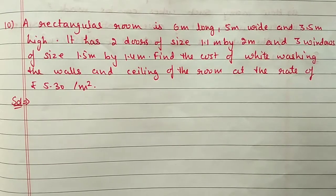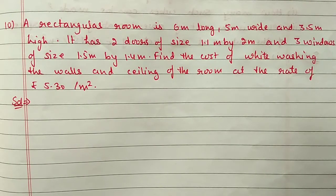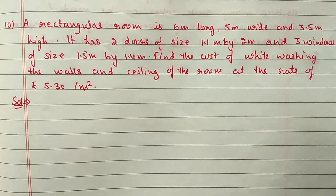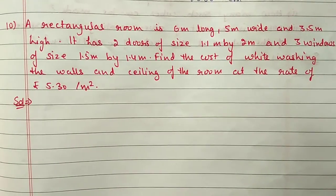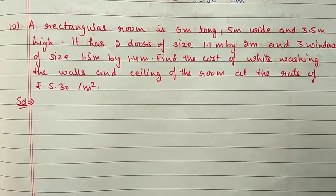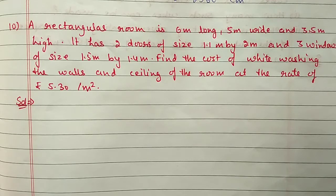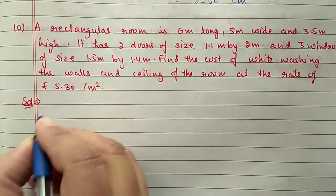Next, question number 10. A rectangular room is 6 m long, 5 m wide, and 3.5 m high. It has 2 doors of size 1.1 m by 2 m and 3 windows of size 1.5 m by 1.4 m. Find the cost of whitewashing the walls and ceiling at the rate of 5 rupees 30 paise per m². First we will find out the area for whitewashing.